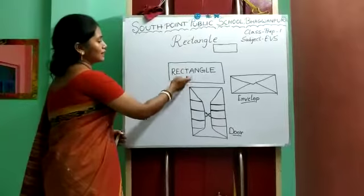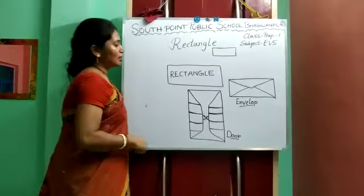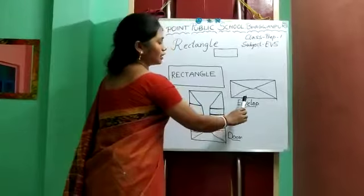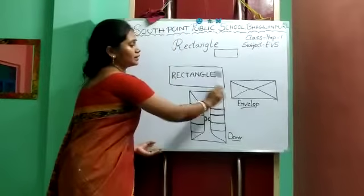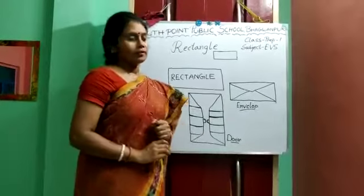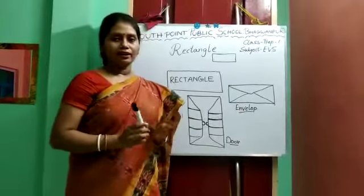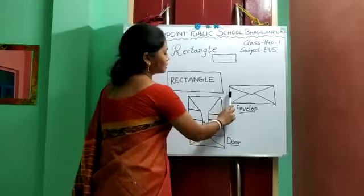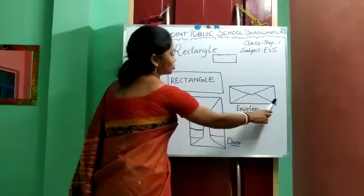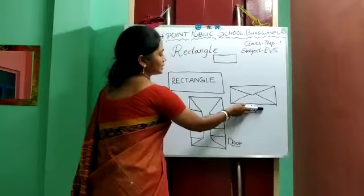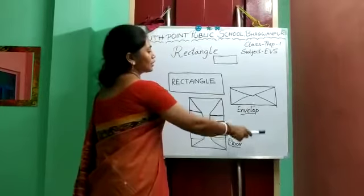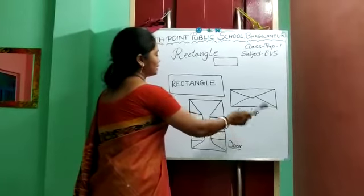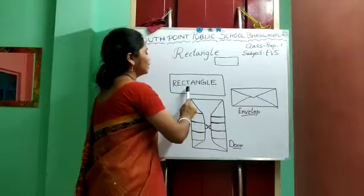Now look at the picture. Kids, this is a picture of an envelope. Its 2 sides are short and 2 sides are long. So kids, the shape of the envelope is a rectangle.